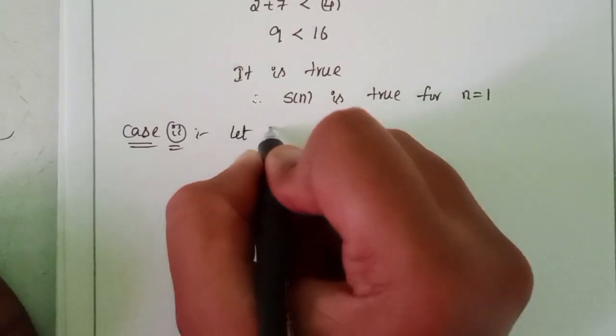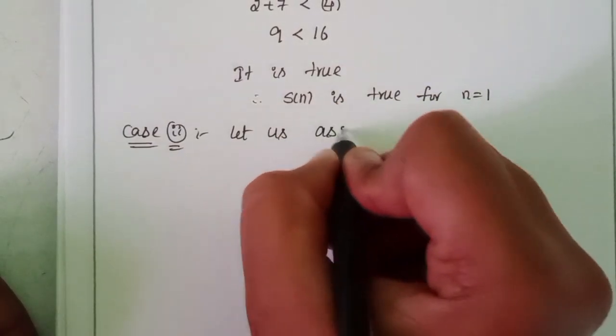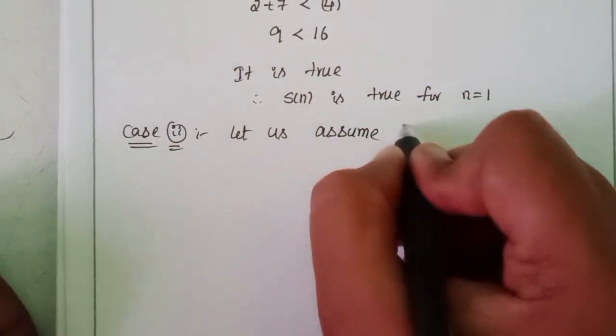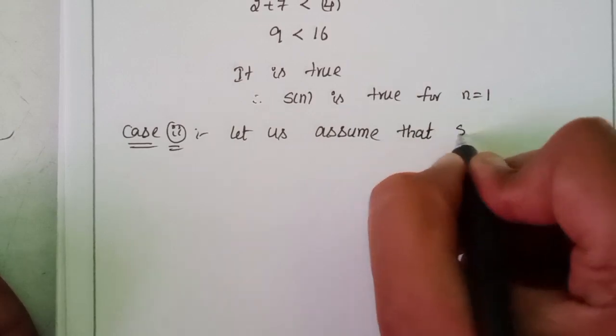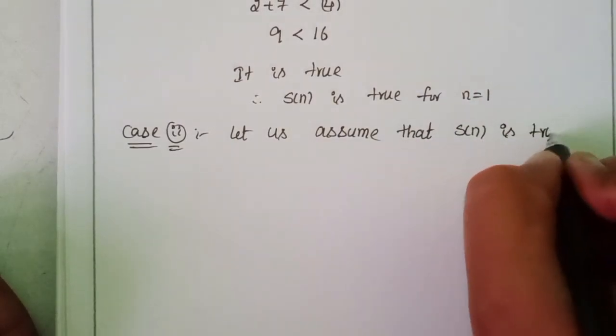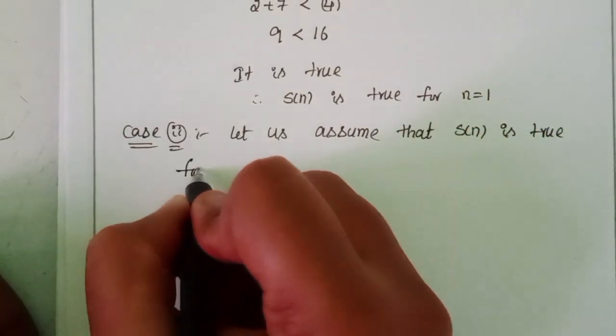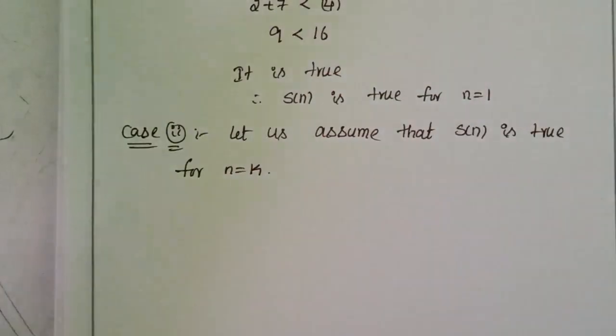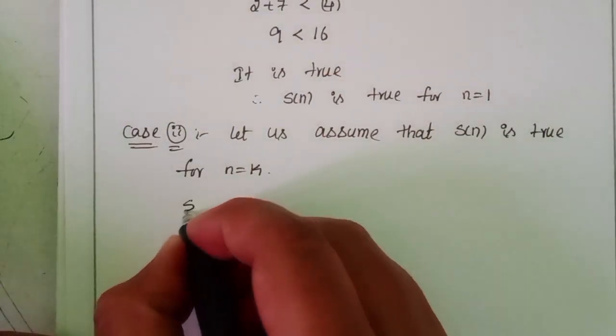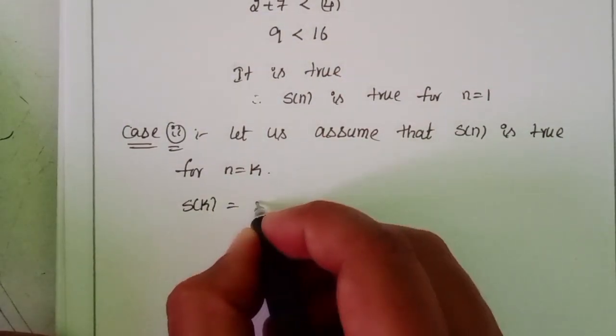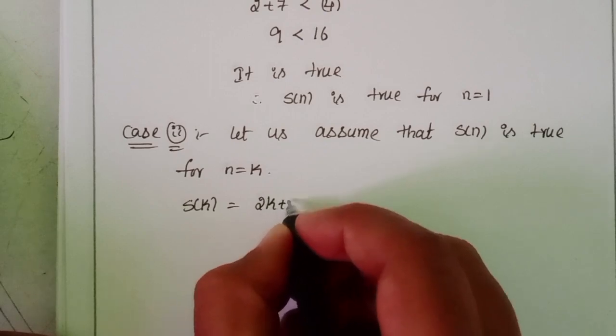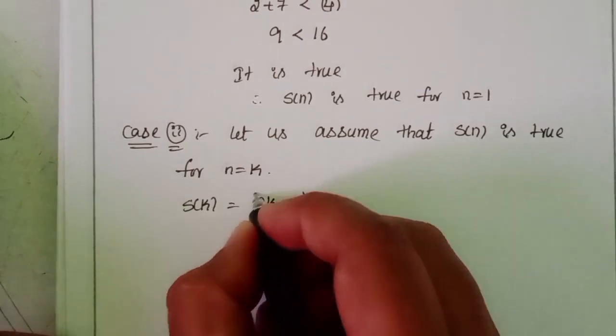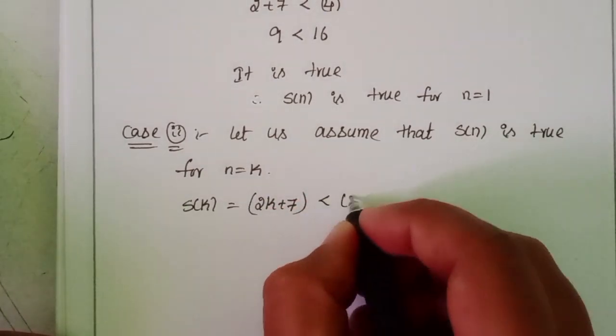Case 2: Let us assume that S(n) is true for n equal to k. Substitute in the place of n, k. S(k) is equal to 2k plus 7 is less than k plus 3 whole square.